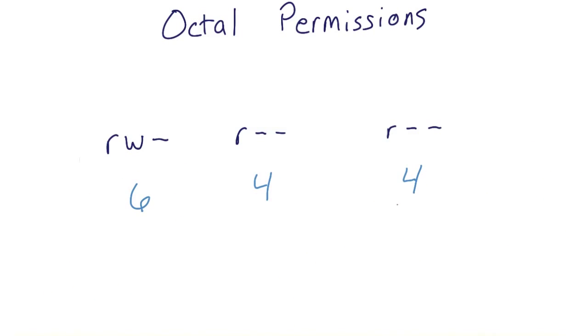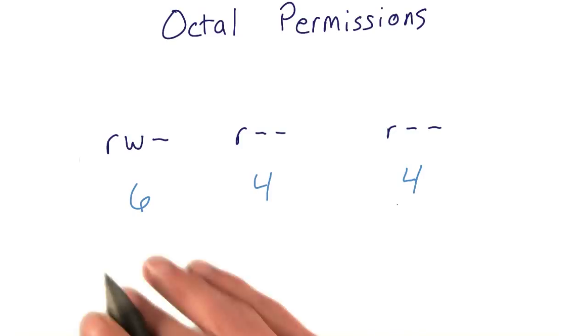To represent this permission set in octal form, we'd use the value 644.